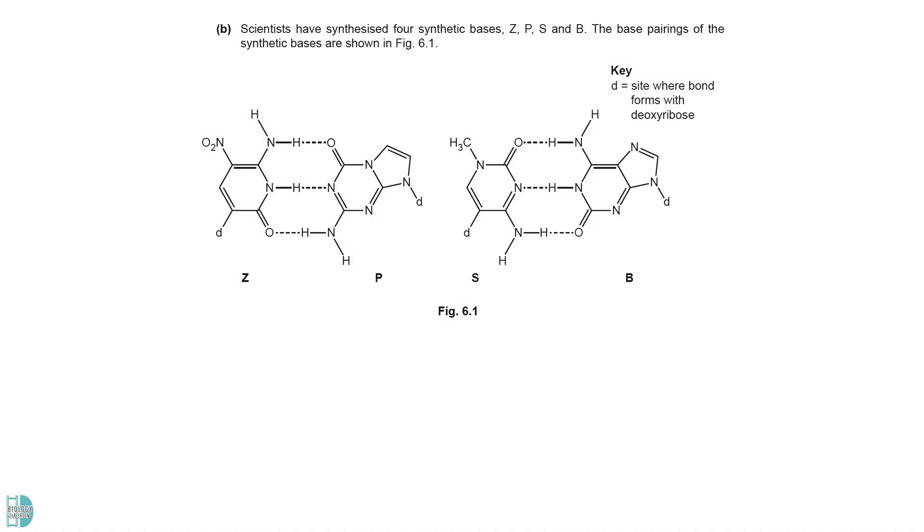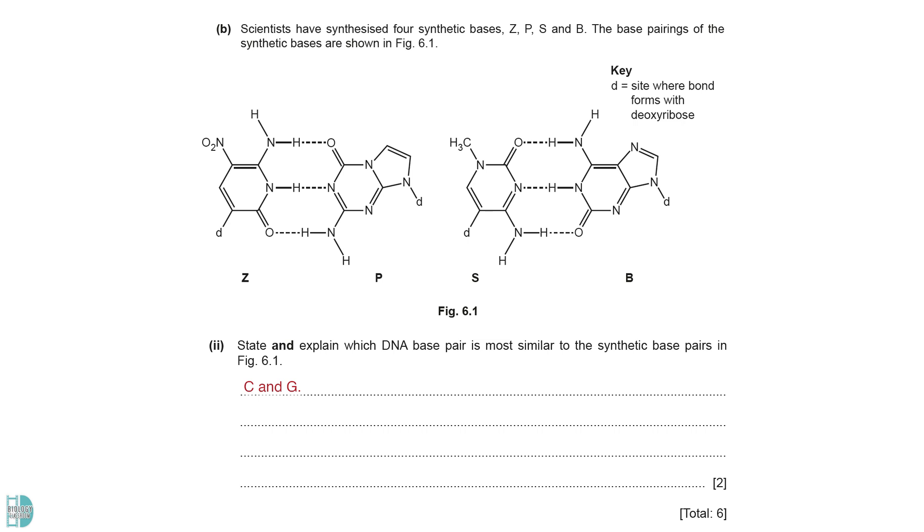B shows some synthetic bases. Purine bases have two rings. So the answer is P and B. The CG pair in DNA is more similar to the synthetic pairs. They are held together by three hydrogen bonds as well. A and T only have two hydrogen bonds between them.